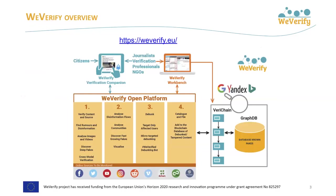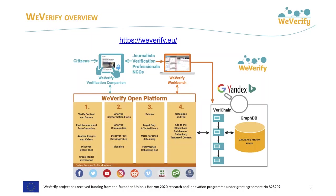We support analysis of disinformation flows and community detection. The platform comprises a micro-targeting layer for debunking disinformation through alerting and warning users that share, reply to or like fake news, while also providing them with evidence of the fake. A novel blockchain-enhanced database of already debunked claims and tampered media is being created to enable efficient decentralized verification and easy detection of near duplicates. In WeVerify, two multifunction professional-oriented tools serve as front-end for verification professionals and for citizens: the open source verification plugin and the collaborative verification workbench.